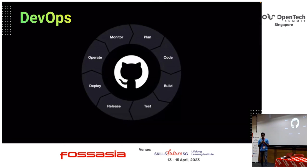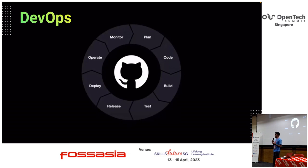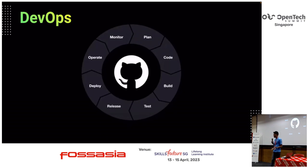Back in the 2000s, departments like developers and QAs, IT teams and security, they worked individually to achieve things much needed in the IT industry. Basically, developers used to code and QAs would be testing. You guys know the stuff.